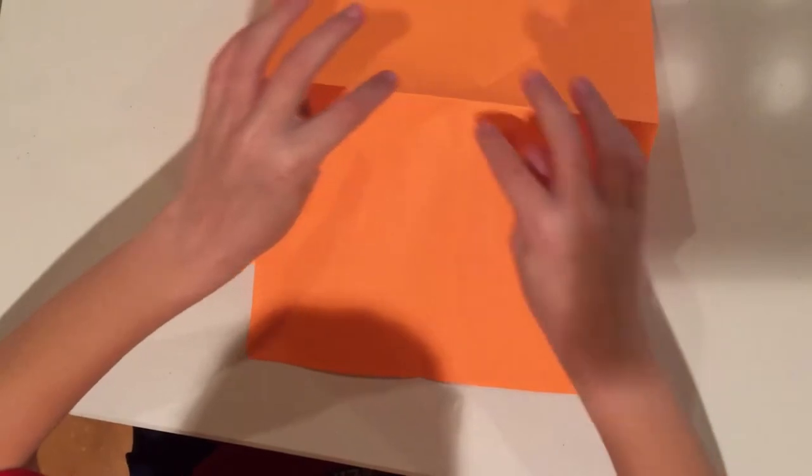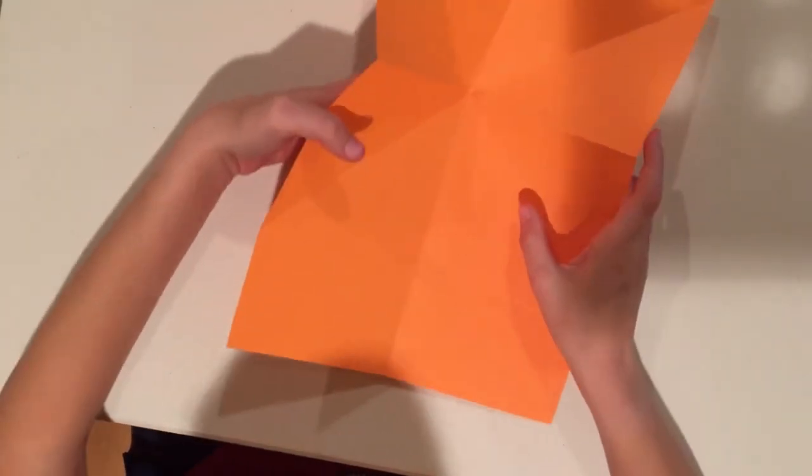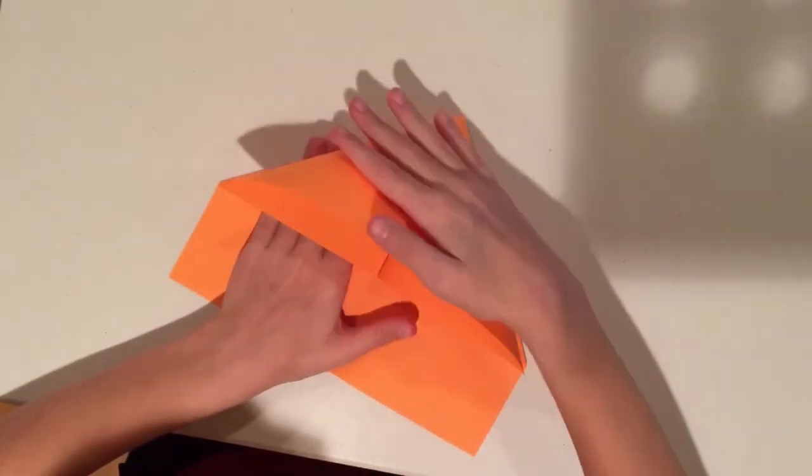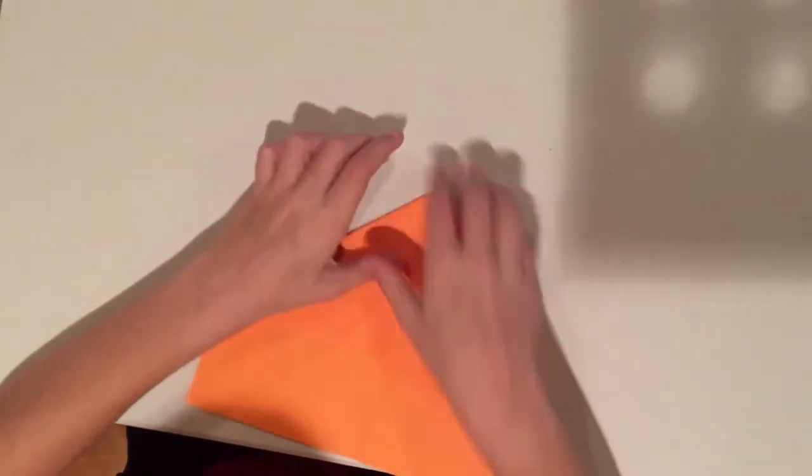Crease, unfold, flip over, and press. You're going to just press in the middle, and it will pop up like this. You're going to bring these in and flatten the top down. This is called a water bomb base.